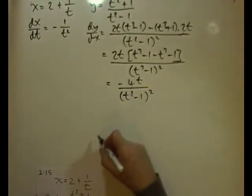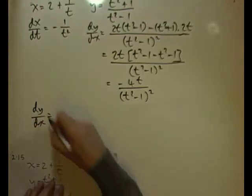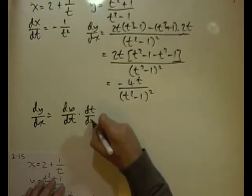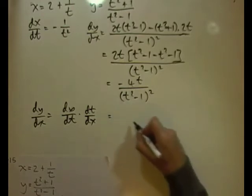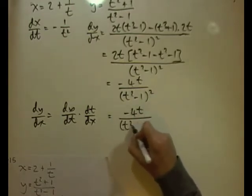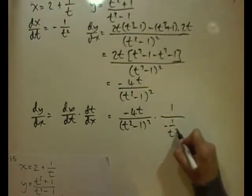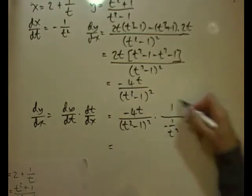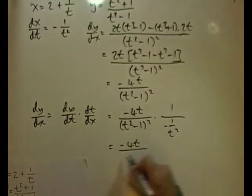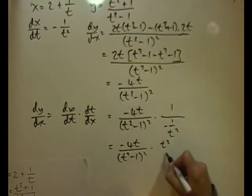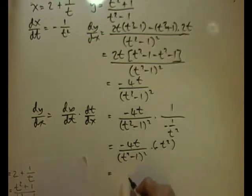Now we can get the first derivative. dy/dx = dy/dt × dt/dx by the chain rule, since y is expressed in terms of t. That's [−4t/(t²−1)²] multiplied by the reciprocal of dx/dt, which is 1/(−1/t²) = −t². Negative times negative gives positive, so dy/dx = 4t³/(t²−1)².